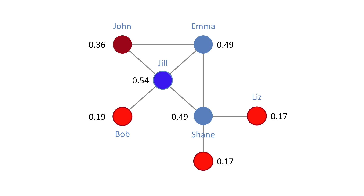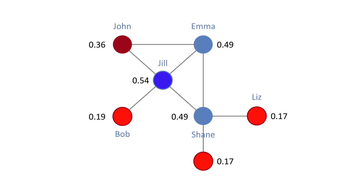John, who has previously not been particularly mentioned in the network, also has a high eigenvector centrality — but not because John is on a lot of key pathways. It's because John is connected to Jill and Emma. So John might be an obscure part of the network, but because of his particular connections to these important people, John might be worth paying attention to.